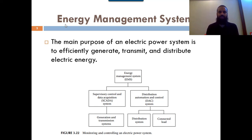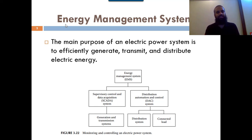When energy is produced on the generation side, we need to observe its parameters — we need to check the output voltage, current, power, rotation of the turbine, frequency, power quality, and waveform of the system. In order to check these parameters, we need an energy management system. These energy management systems are installed on the generation side, transmission side, distribution side, and even in substations and grid stations.